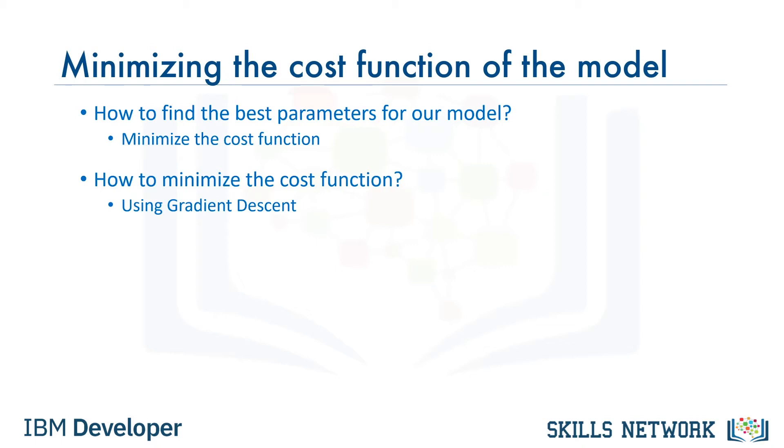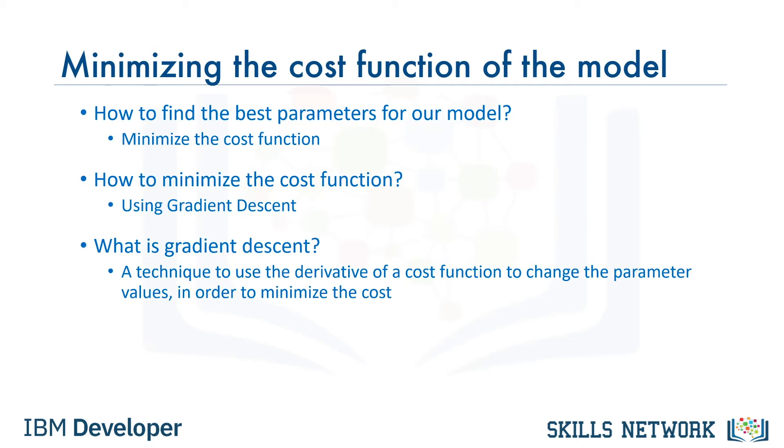There are different optimization approaches, but we use one of the most famous and effective approaches here, gradient descent. The next question is, what is gradient descent? Generally, gradient descent is an iterative approach to finding the minimum of a function. Specifically, in our case, gradient descent is a technique to use the derivative of a cost function to change the parameter values, to minimize the cost or error. Let's see how it works.